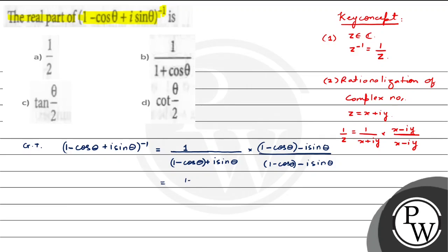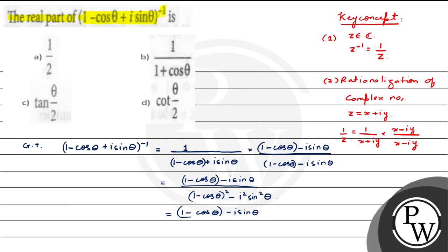Now let's simplify it. The numerator becomes (1 minus cos theta minus i sine theta). For the denominator, we get (1 minus cos theta) whole squared minus i squared sine squared theta. Expanding using the (a minus b) whole square formula, it becomes 1 plus cos squared theta minus 2 cos theta. And since i squared equals minus 1, we get plus sine squared theta.